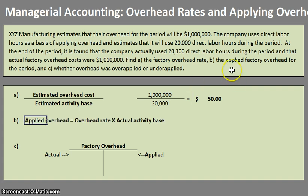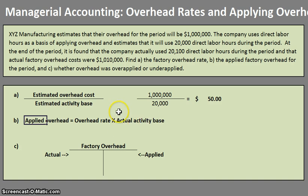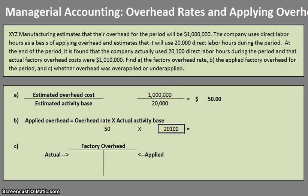When we're getting into Part B and applying the factory overhead, keep in mind that when doing our factory overhead rates our focus was on estimates. Now that we're applying the overhead, our focus is on the overhead rate we found in A times the actual activity base — so we're going to be multiplying it by actual direct labor hours. Our overhead rate was $50 and our actual direct labor hours used was 20,100 hours. So $50 times 20,100 direct labor hours means that the applied overhead is $1,005,000. That's our answer for B.